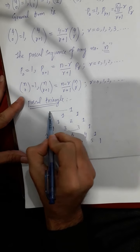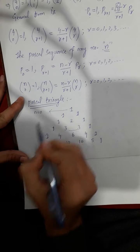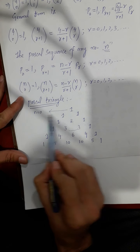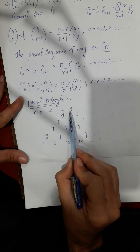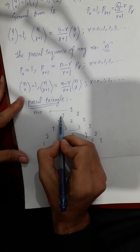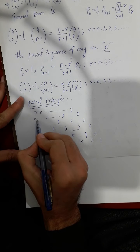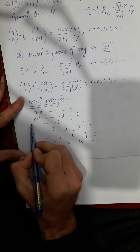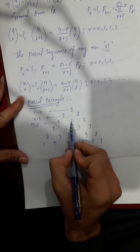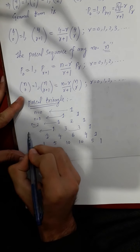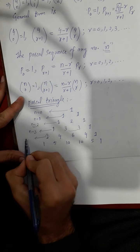Actually, the Pascal sequence of N equals 0 is just {1} — only one non-zero term. The Pascal sequence of N equals 1 is {1, 1}. The Pascal sequence of N equals 2 is {1, 2, 1} — two non-zero terms, and all remaining terms are zero. For N equals 3, and for N equals 4, the Pascal sequence is the row 1, 4, 6, 4, 1.